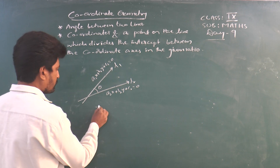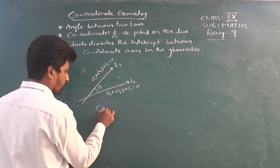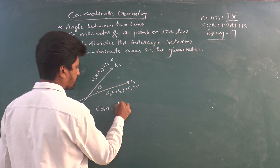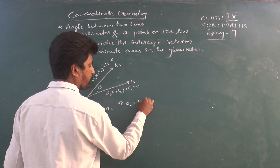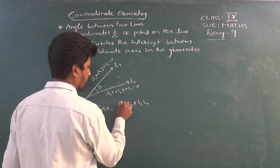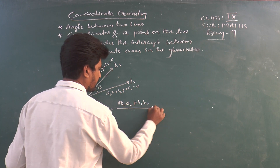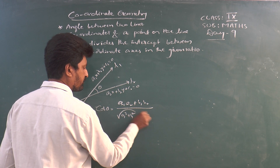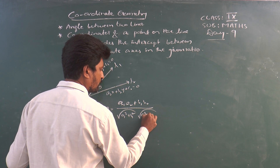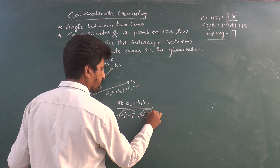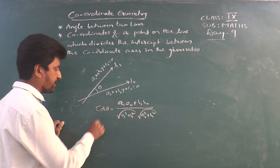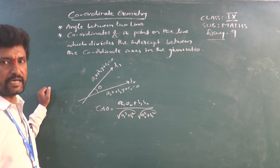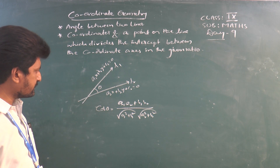For finding cos θ, we use the formula: (a1·a2 + b1·b2) divided by the square root of (a1² + b1²) into the square root of (a2² + b2²). This is the formula for finding the cosine of the angle between the two lines.